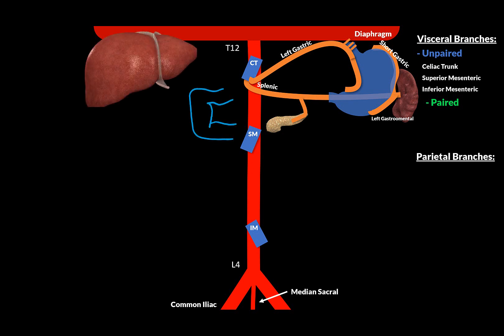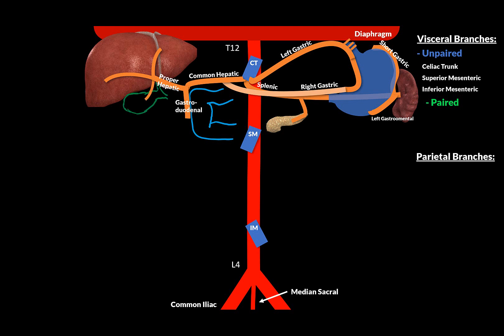The last branch of the celiac trunk is the common hepatic artery, running above the duodenum. It gives off the right gastric artery, which goes towards the lesser curvature of the stomach to meet up with the left gastric artery and supply the stomach. The common hepatic will divide into the gastro-duodenal and the proper hepatic artery. The proper hepatic artery will run towards the porta hepatis of the liver, then divide into the right and left branch to supply the lobes of the liver. The right branch gives off the cystic artery, supplying the gallbladder.